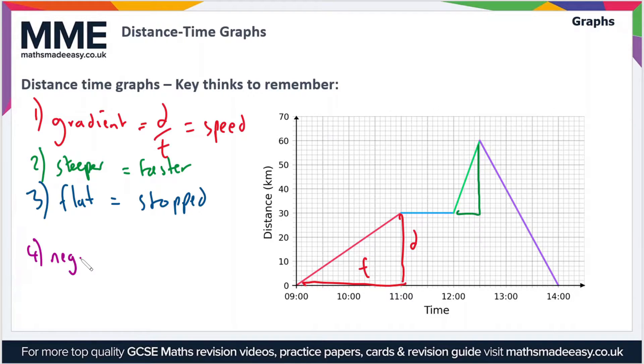The final point is that if you have a negative gradient, in this example the last section here in purple, what that means is that you're returning to the start point. The distance from the start point is decreasing, so in other words you're returning to where you came from. That's return to start.